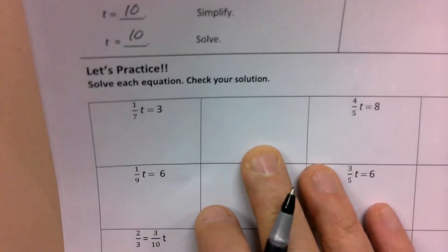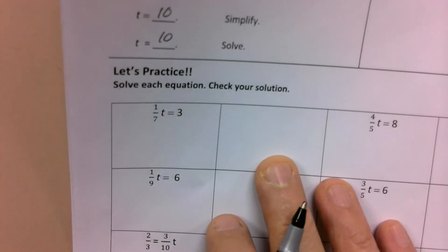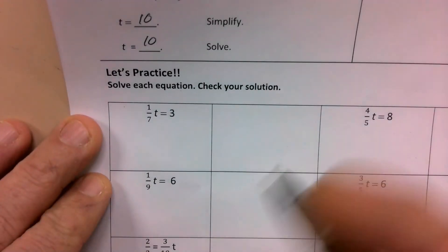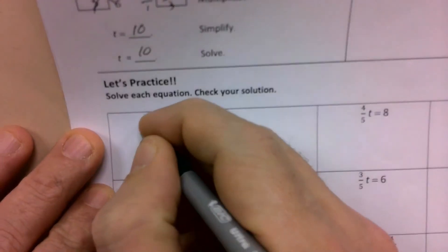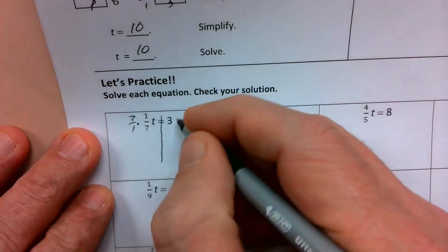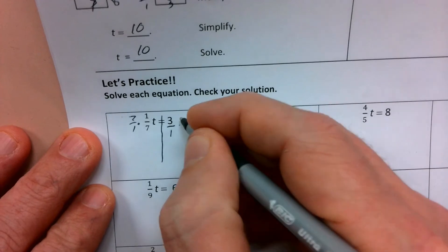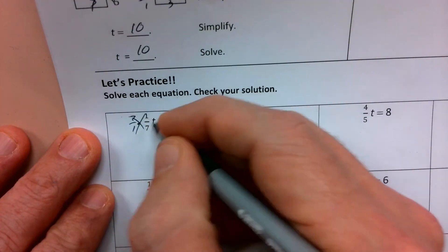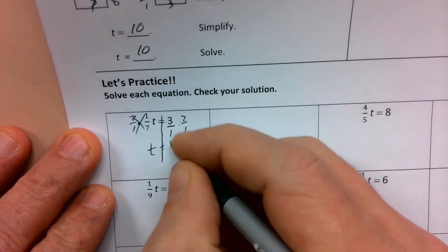Next one. One seventh of T or one seventh times T is equal to three. I mean mentally could you do it? Maybe. But we're going to show you this method here. Multiply it by seven over one. Take three over one times seven over one. Cancel it out. T is equal to twenty one.